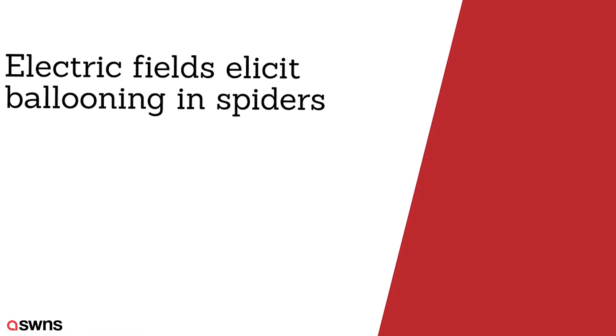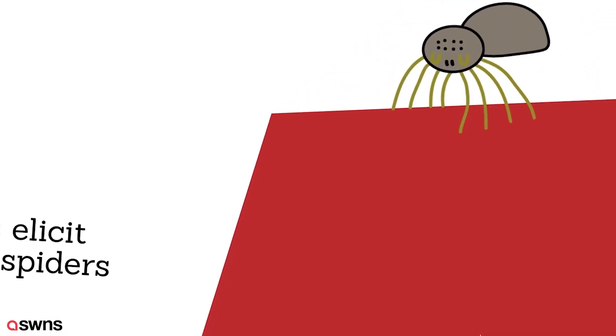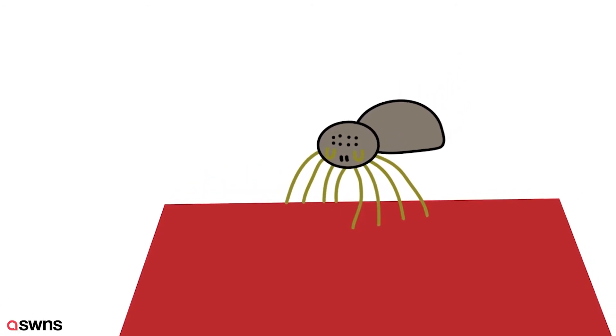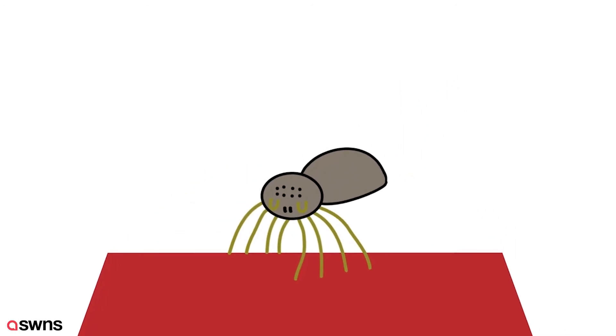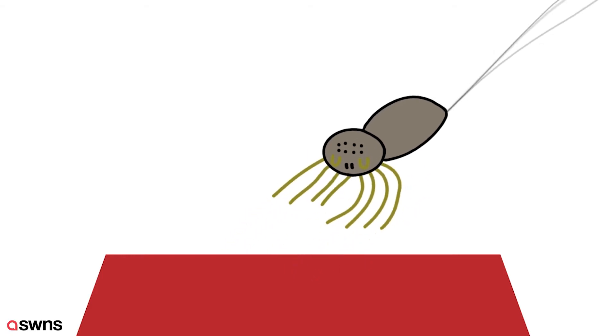Of all the great flyers the world has ever known, it may come as a surprise that one of the best aviators in the animal kingdom doesn't even possess wings. Spiders instead use long fans of silk to carry them through the air, often for many hundreds of miles in a process known as ballooning.